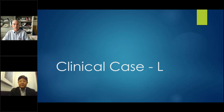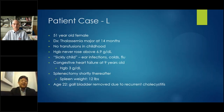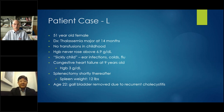Elle is a 51-year-old female under our care. Her diagnosis is thalassemia major, made at 14 months of age, and she had no transfusions — she was elected not to be treated with transfusion in childhood and never ran a hemoglobin above 6.9 grams per cent. She was described as a sickly child with multiple ear infections, colds, and flu. She suffered congestive heart failure at nine years of age with a documented hemoglobin at 3 grams per cent, and had a splenectomy shortly thereafter. The reported spleen weight was 12 pounds — that is massive.